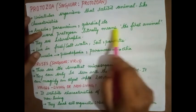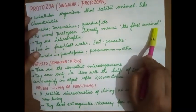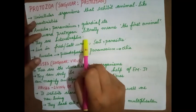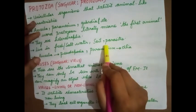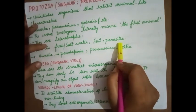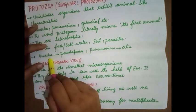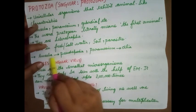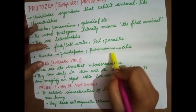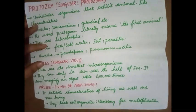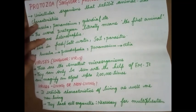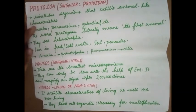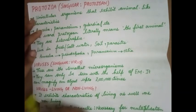The word 'protozoan' literally means 'the first animal.' They are heterotrophic and live in fresh water, salt water, soil, or as parasites. The locomotory structures in some protozoans are: amoeba uses pseudopodia, and paramecium uses cilia. Locomotory structures are those which help in movement.